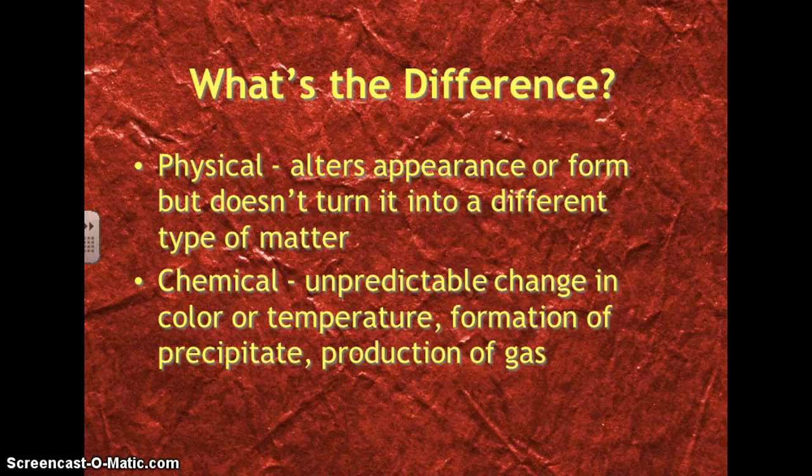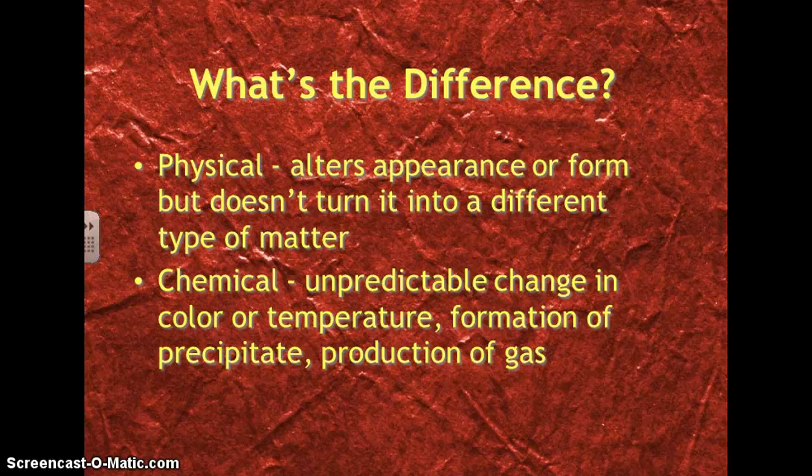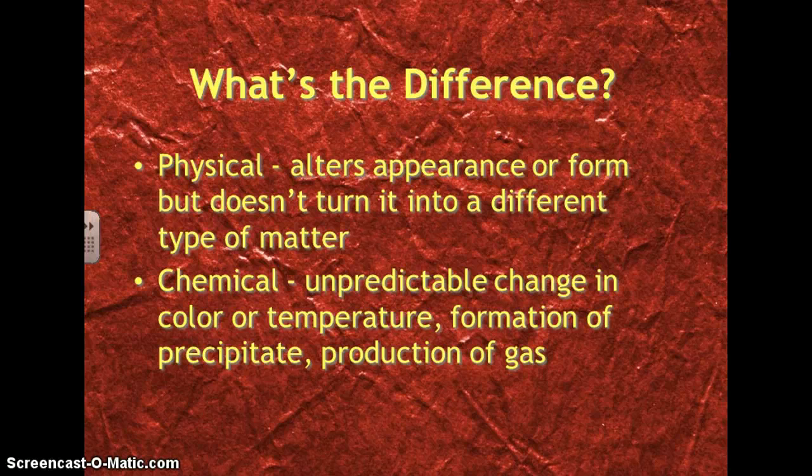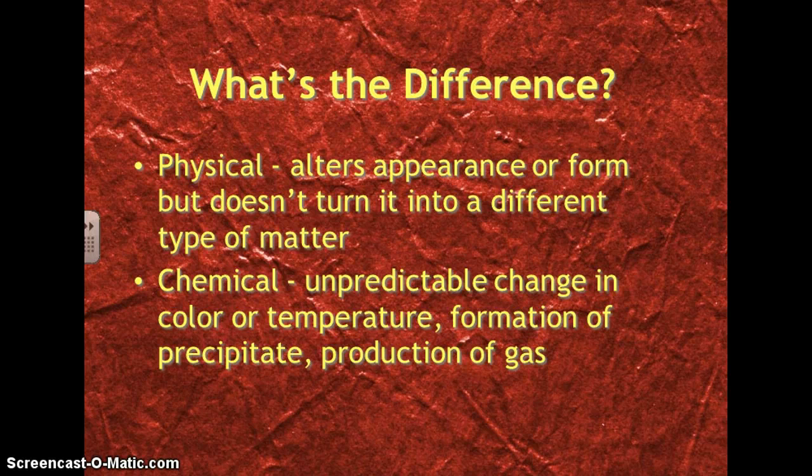Chemical changes are unpredictable changes in color or temperature. So, for instance, if you take two clear chemicals and mix them together and they turn red, that's an unpredictable color change. Or, if you take two room temperature chemicals and mix them together and they get really hot, that's also an unpredictable change, because you don't expect two room temperature things to get really hot all of a sudden.